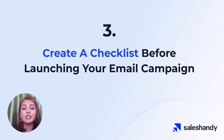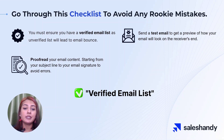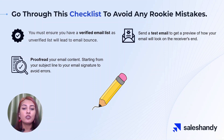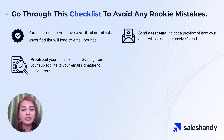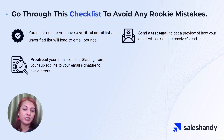Before you hit send on that email outreach, it's important to make sure you've covered all your bases and thought through every step of the process. That's where a checklist comes in handy. The first and most important step is to make sure you have a verified email list, as an unverified list will likely lead to a high bounce rate. Secondly, always proofread your email content to ensure there are no errors from the subject line to the email signature. It's also a really good idea to send a test email to get a preview of how your email will look on the recipient's side.